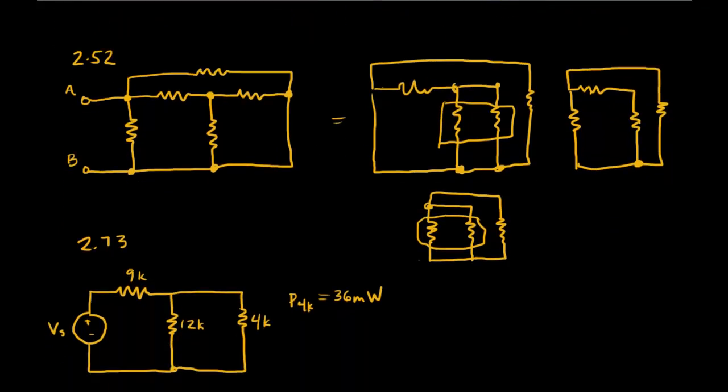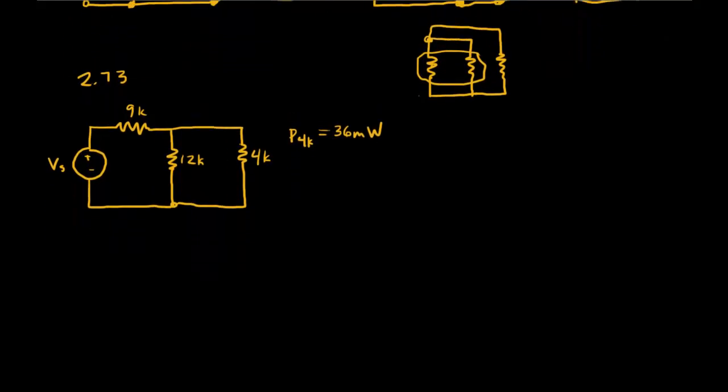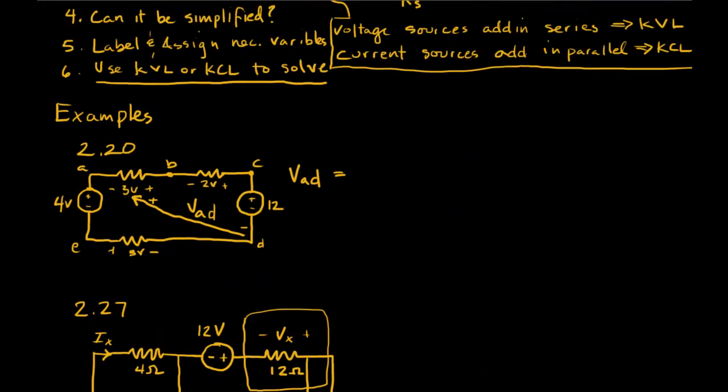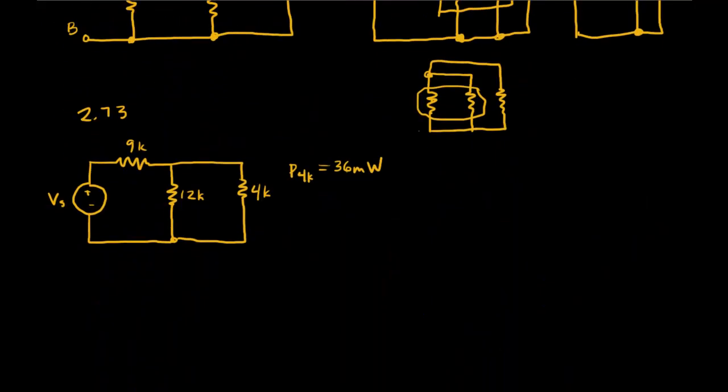Alright, let's look at the next one. This one, 2.73. We're being asked to find Vs in this circuit. And we're given that the power on this 4K resistor is absorbing is 36 milliwatts. So we have to determine. Let's go back up to our list to make sure we're sticking to it here. We write the question, which we just did.